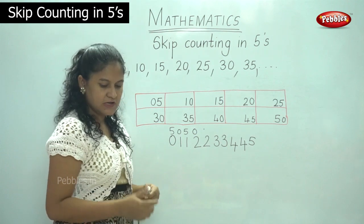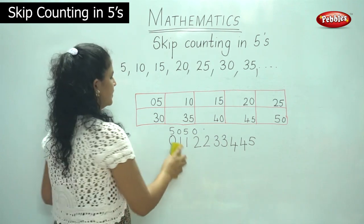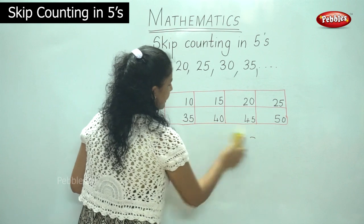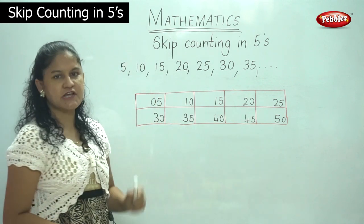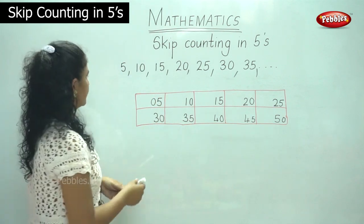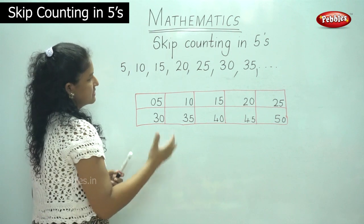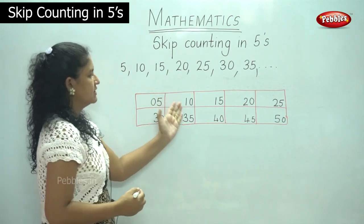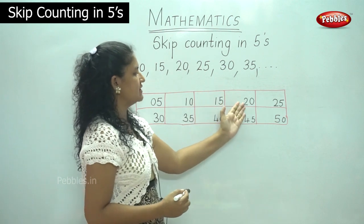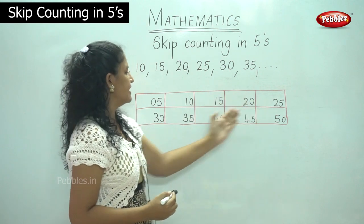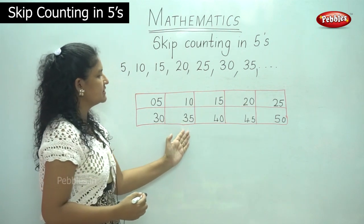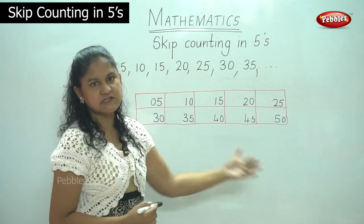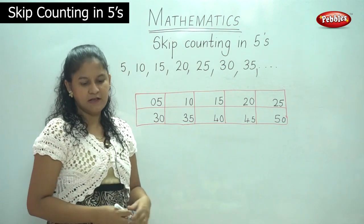So now if we write the table for 5 we can check our table. So we have 5, 10, 15, 20, 25, 30, 35, 40, 45, 50. So this is your table 5.